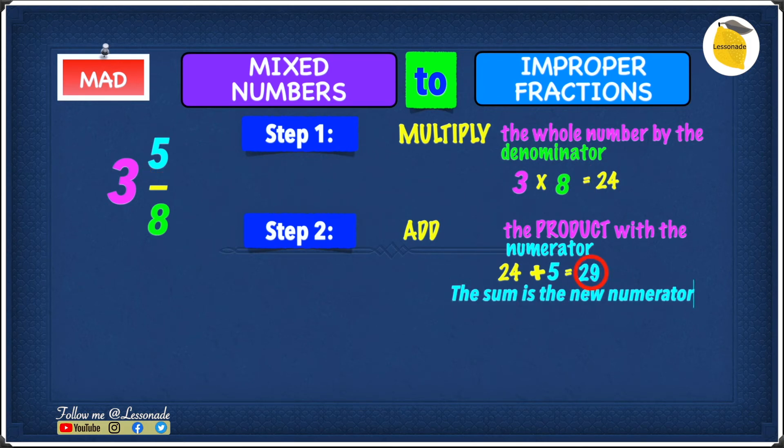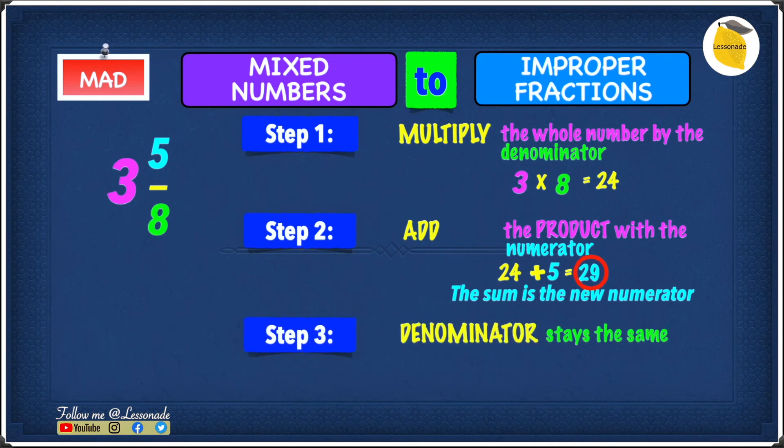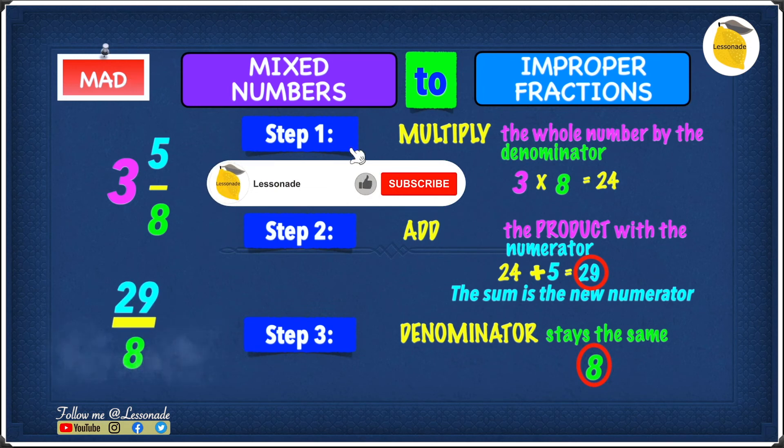So that means the sum is the new numerator, and the sum is 29. So therefore, 29 is the numerator. Let's move into step 3. And step 3 is the denominator, and it stays the same. The denominator in our case is 8. So 8 is also going to be the denominator.